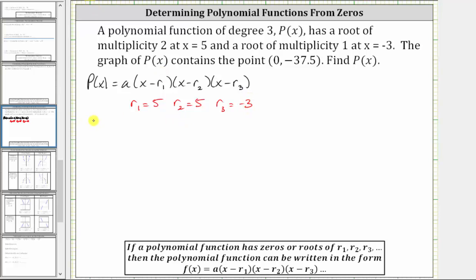Performing substitution gives us p(x) equals a times the quantity x minus five, times the quantity x minus five again. Notice, because x equals five has multiplicity two, we have two factors of x minus five. And then because the root of x equals negative three has multiplicity one, we have one factor of x minus negative three. Let's simplify x minus negative three to x plus three.